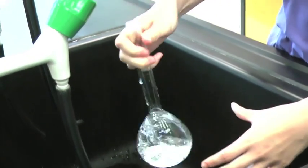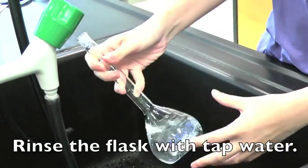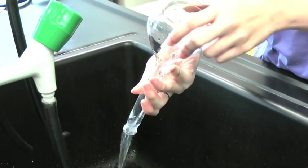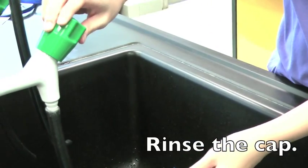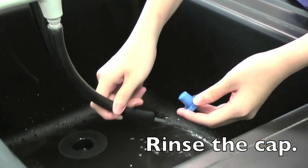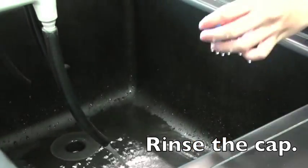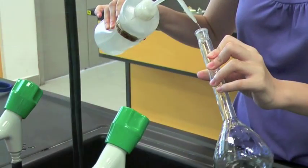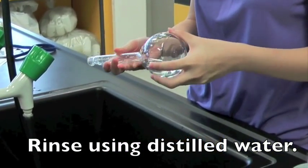To rinse the flask, first use tap water. Rinse the cap thoroughly with tap water. Next, repeat the same steps now using distilled water.